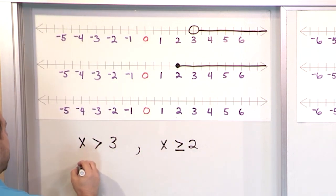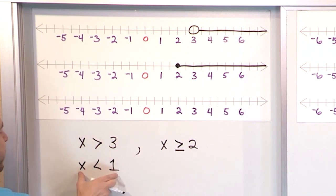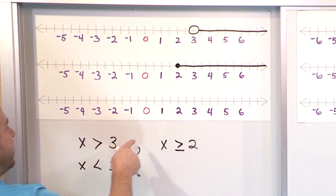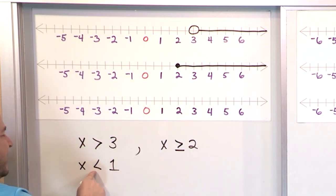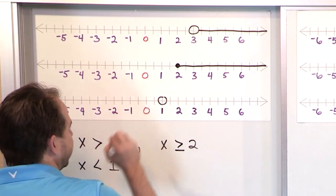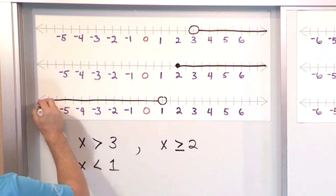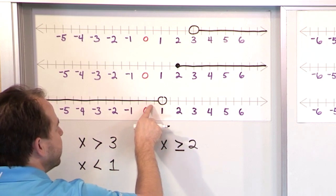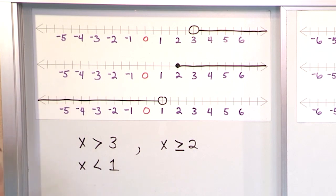If we had the inequality x less than 1, that would mean everything smaller than 1 — so 0, negative 1, negative 2, and so on, to the left of 1. We go to the number line, find the number 1 right here. It's less than but not equal to 1, so we put an open circle here, and shade everything to the left — all these numbers, including the negative numbers and the numbers between 0 and 1, but not including 1 itself because it's an open circle.